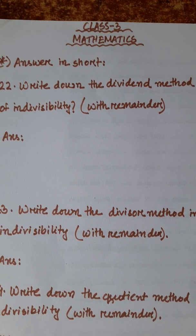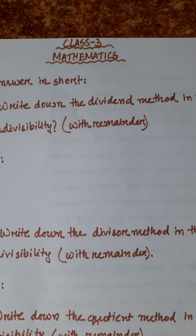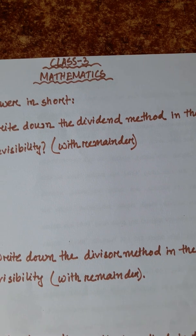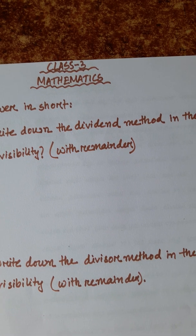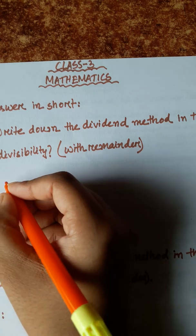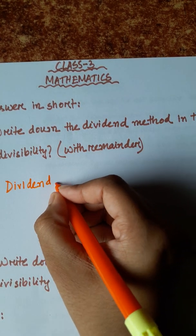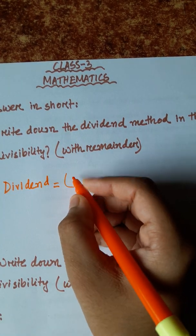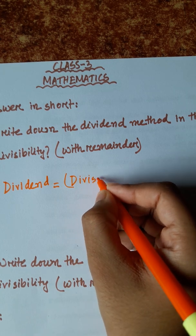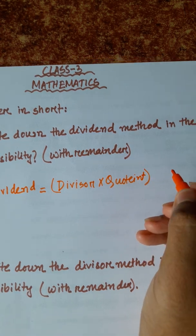In the last video we started number 21 and number 22. Number 22 is: write down the dividend method in the case of indivisibility. We have to write down the dividend method in the case of indivisibility with remainder. Dividend is equal to divisor into quotient plus remainder.